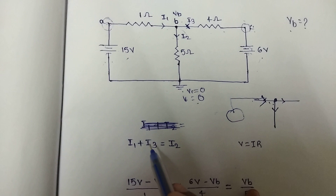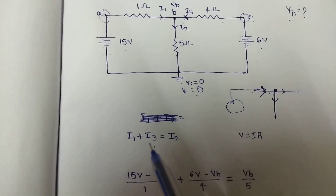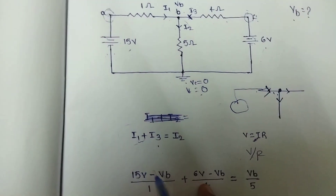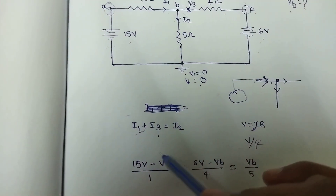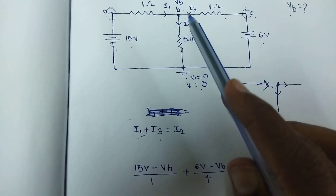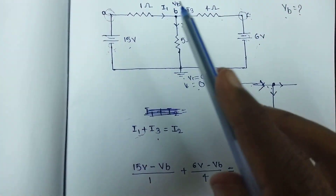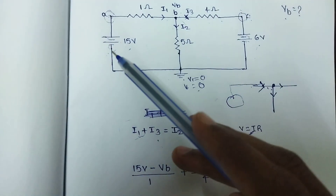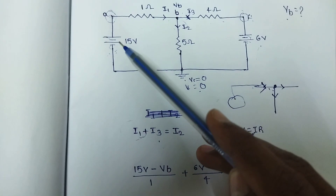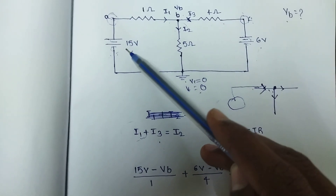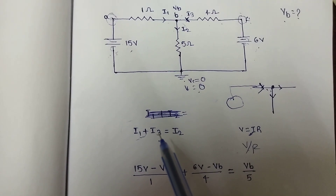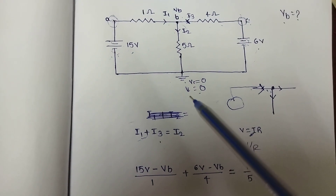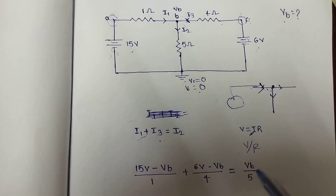We apply Ohm's Law to each current. For I1, V equals IR, so I equals V over R. The voltage across the 1-ohm resistor is 15 minus VB, so I1 equals 15 minus VB divided by 1. For I3, the voltage is 6 minus VB across the 4-ohm resistor, so I3 equals 6 minus VB divided by 4. For I2, the voltage is VB minus 0 across the 5-ohm resistor, so I2 equals VB divided by 5.